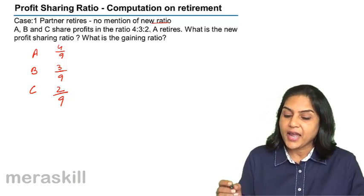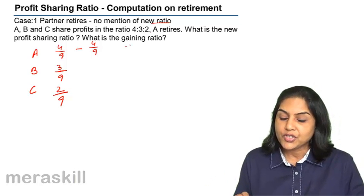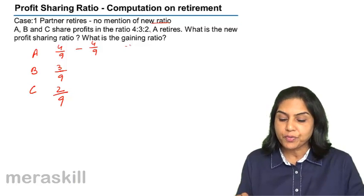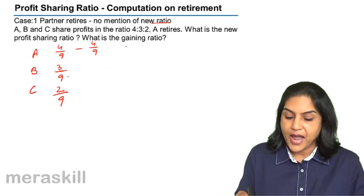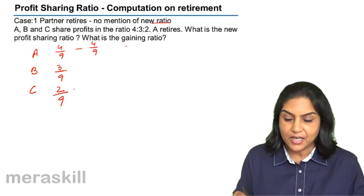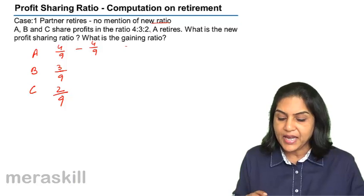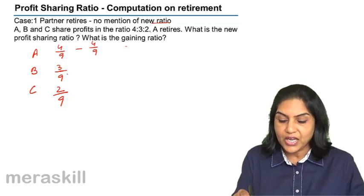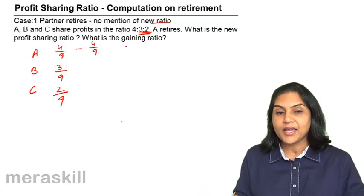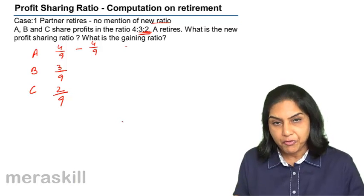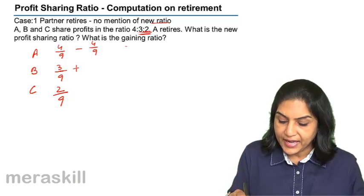On retirement, A retires, so A's share of 4/9 is removed. The new profit sharing ratio means that 4/9 has to be shared between B and C. Since nothing is mentioned about a new ratio, 4/9 — the sacrifice made by A — will be shared by B and C in their existing ratio of 3:2.